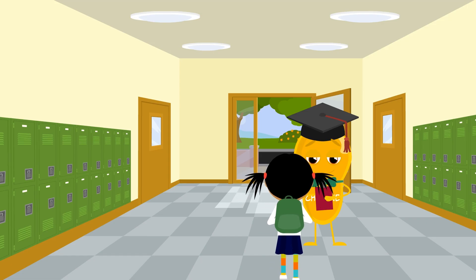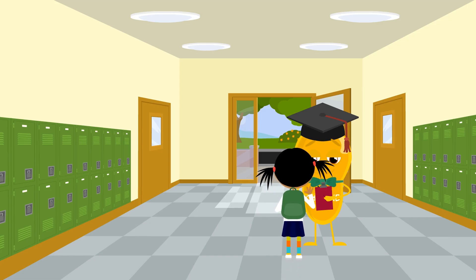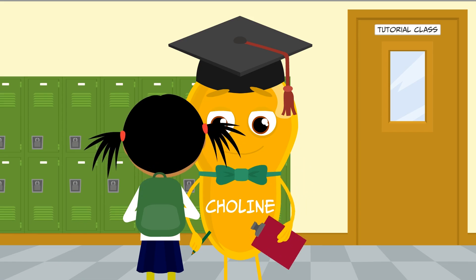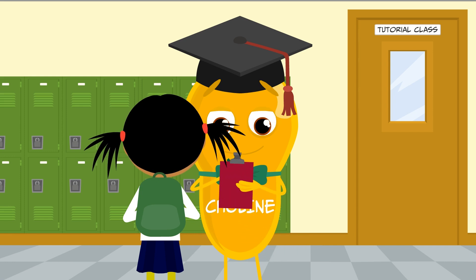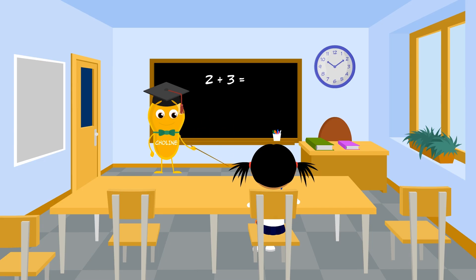Feeling glum, Sophia ran into Professor Colleen in the hallway and shared her recent math exam struggles. Professor Colleen suggested some after-school tutorial lessons to help her get back on track. He also suggested adding some high-choline superfoods to her diet which help increase your brain power. Sophia agreed.